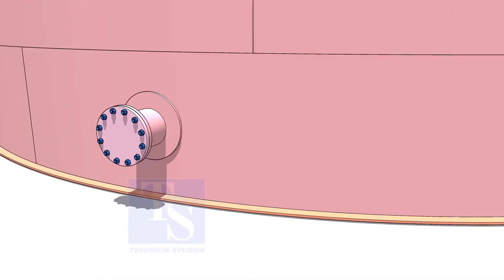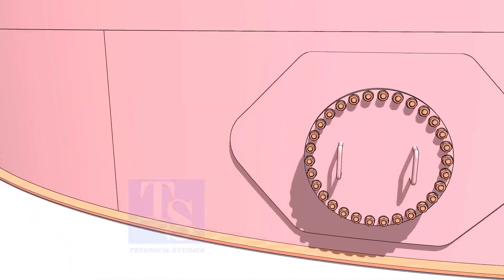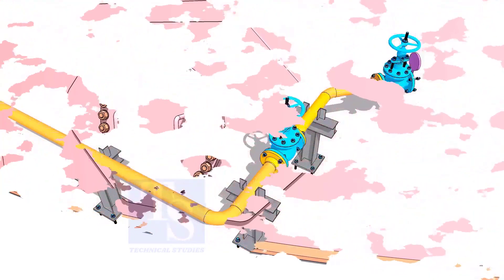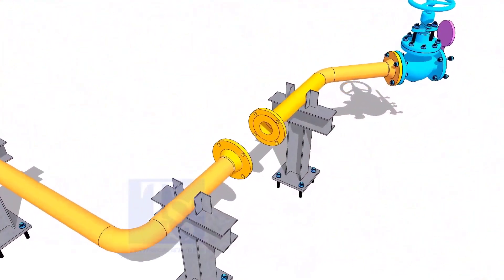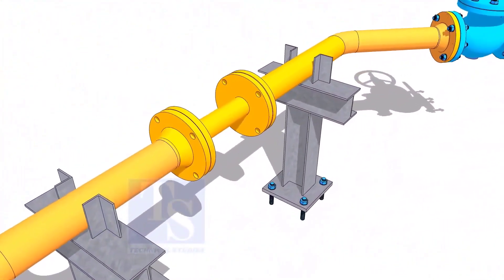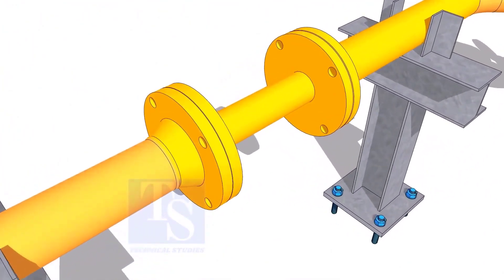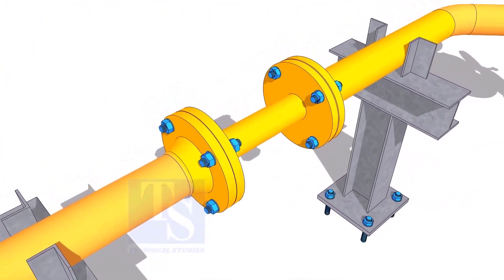Plate flanges are used for low-pressure services or to blind the nozzles of vessels, tanks, etc. for hydrotest purposes. Other use of plate flange is making temporary spools to replace valves and equipment on a piping system.